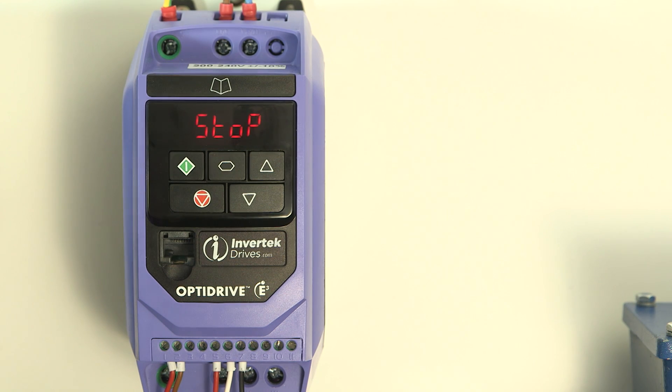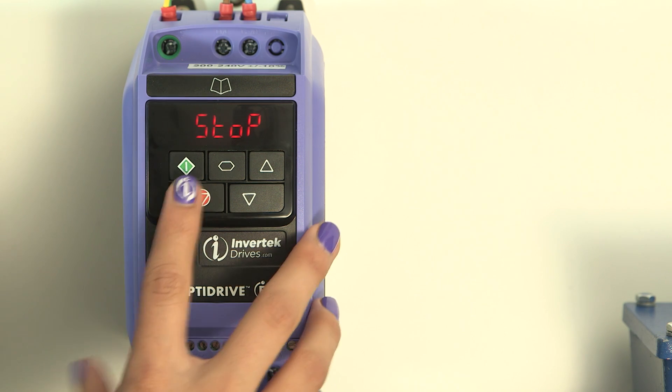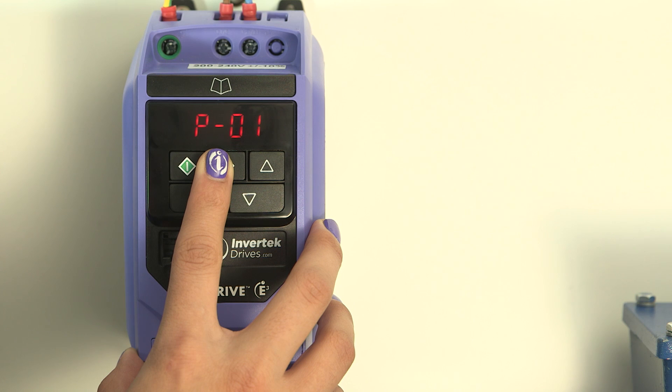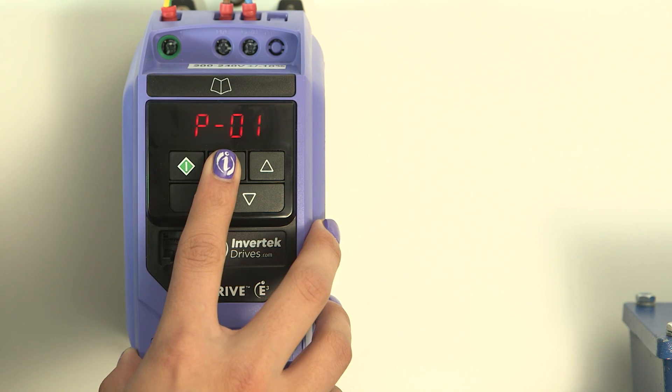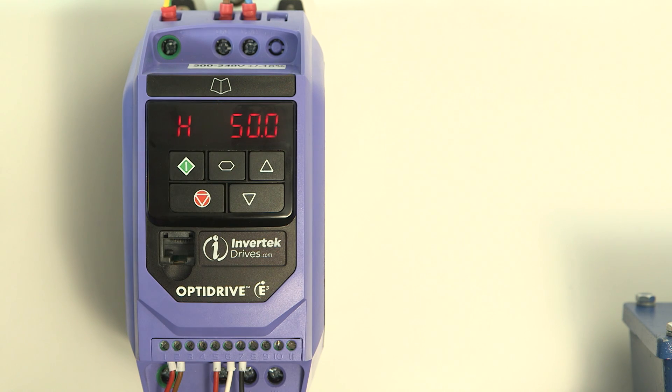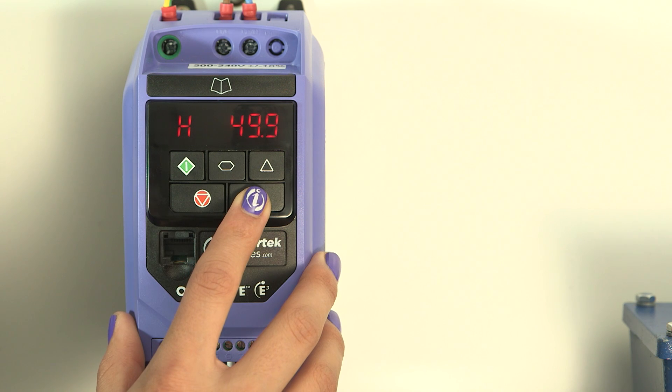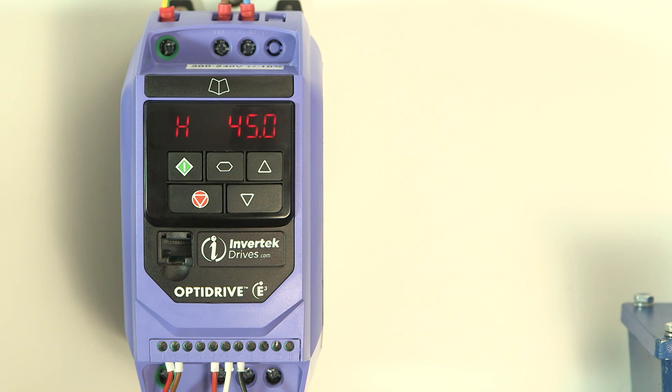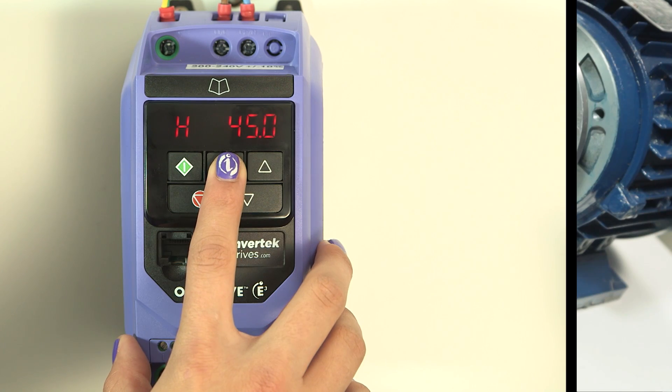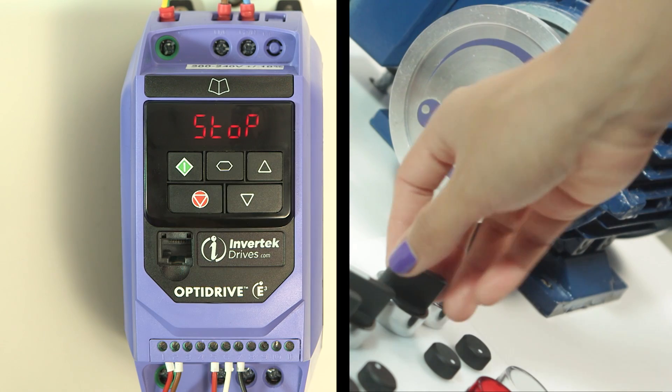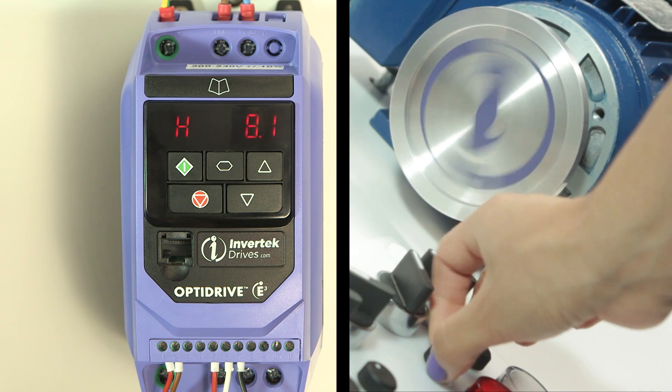The first setting or parameter sets the maximum frequency. To access this parameter we press and hold the navigate button which takes us to P1. A short press and we can see and adjust the value if necessary. Remember if you go higher than nominal motor frequency you will lose torque capability. I will set it to 45 hertz just to show how. Long press and navigate to return to the normal display. Then run the drive and we can see the maximum frequency has changed.